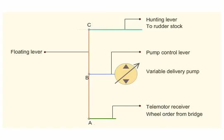The pump control lever is connected to the middle of the floating lever. When the pump control lever is in B position, the pump will not discharge.